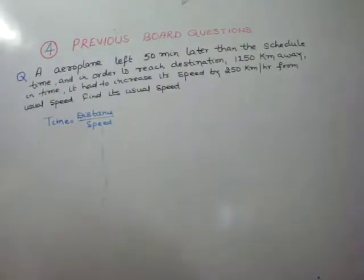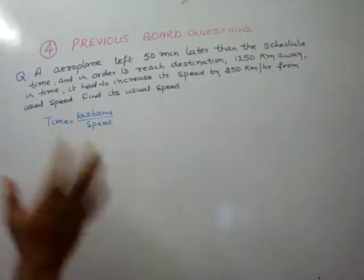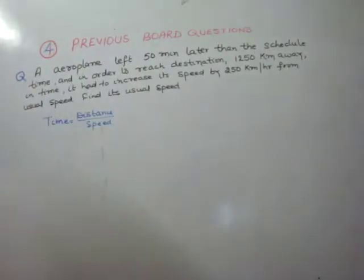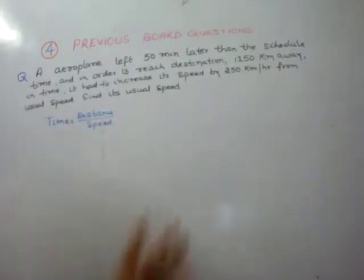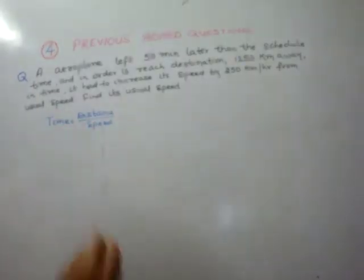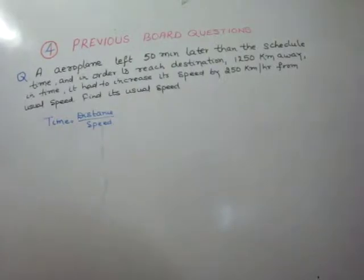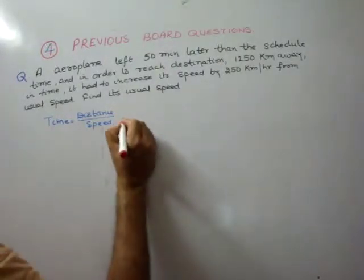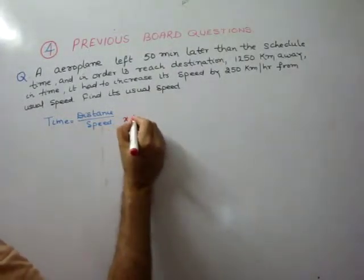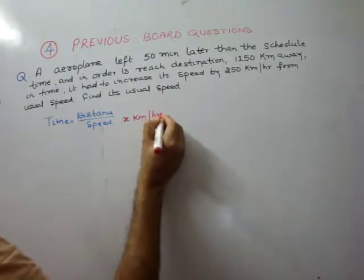Now, what is the speed? What was the usual speed? If his usual, that is original speed, we are not knowing, so we will take it as x km per hour.